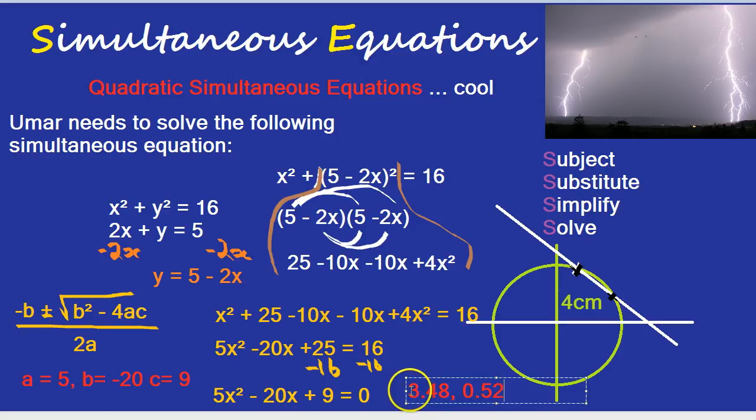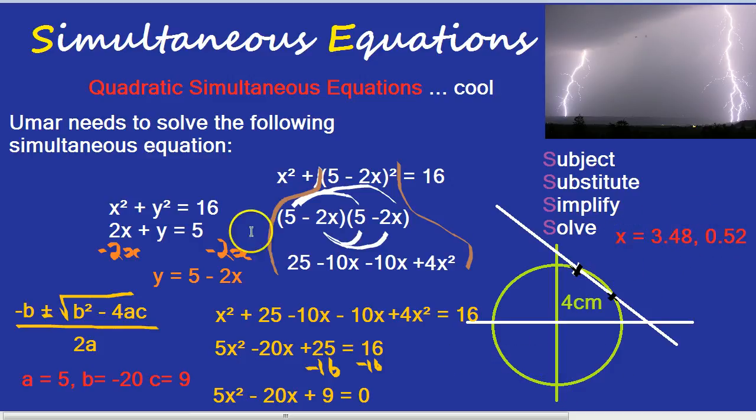And it will usually say to three significant figures. But those, remember, are our solutions for X. So those would be the X coordinates of the two points where the line and the circle cross, or basically the solution to this simultaneous equation. You need to then go and put those two values into the equation, into either of these equations. I recommend the easier one down here to find out Y.